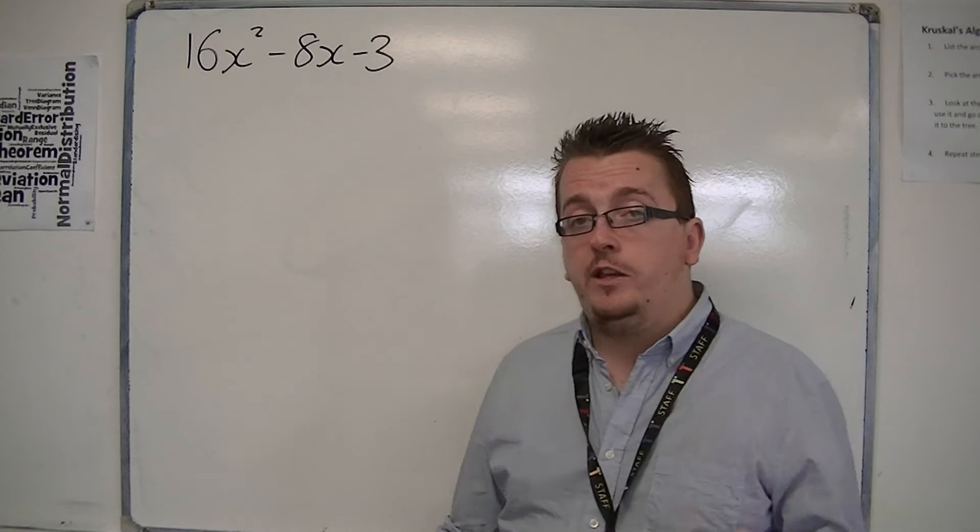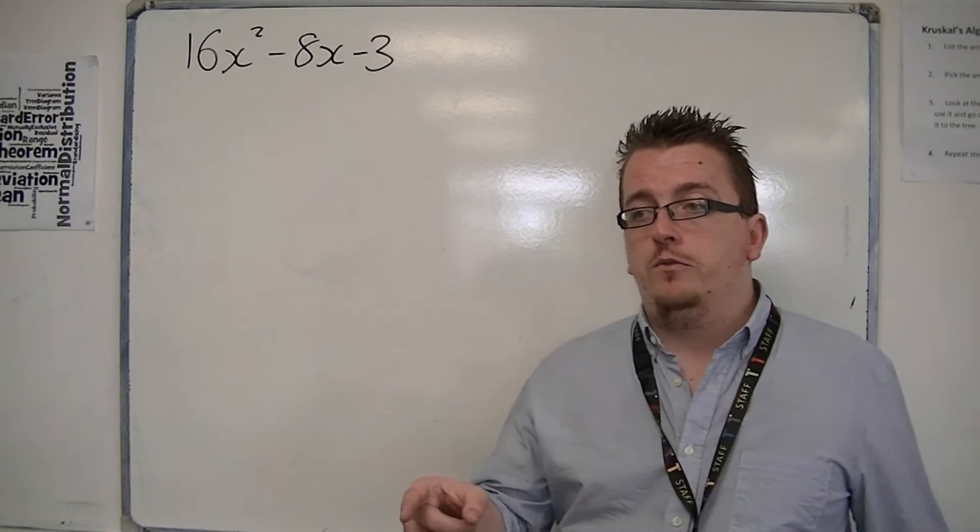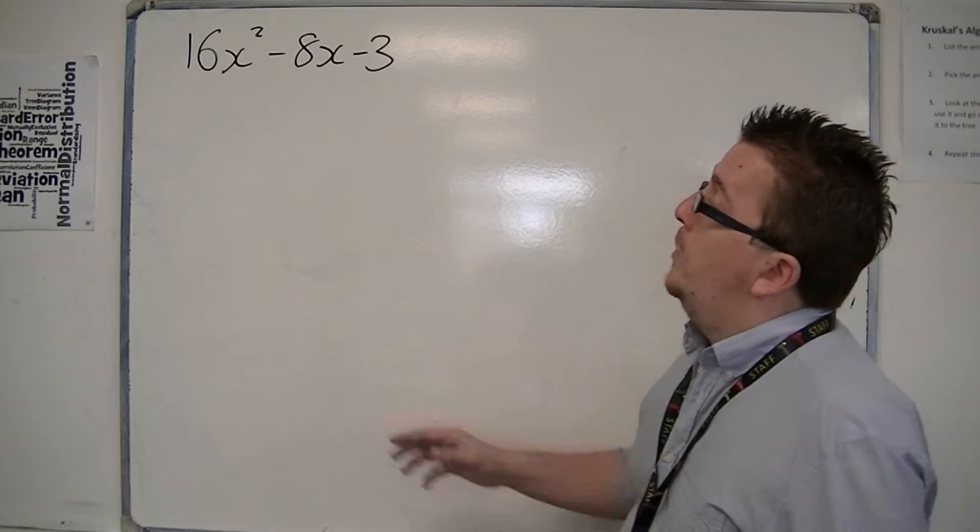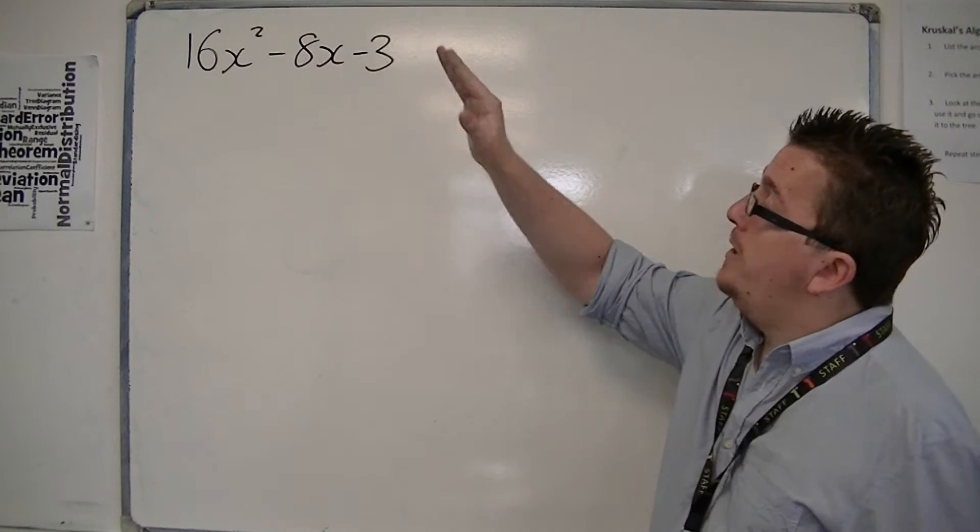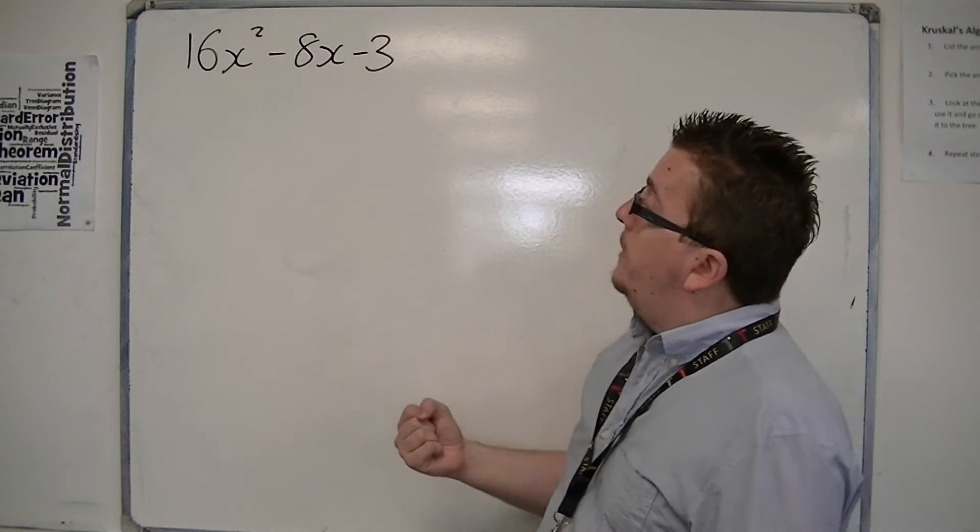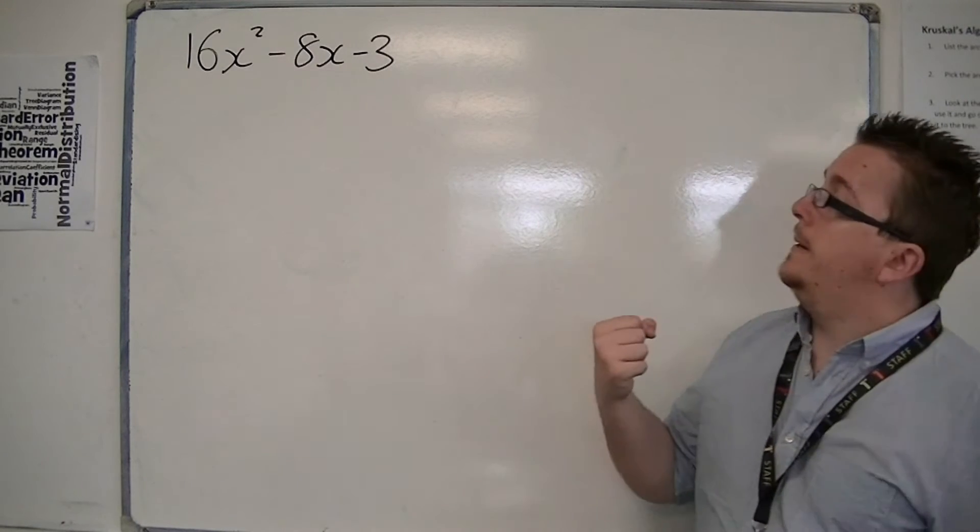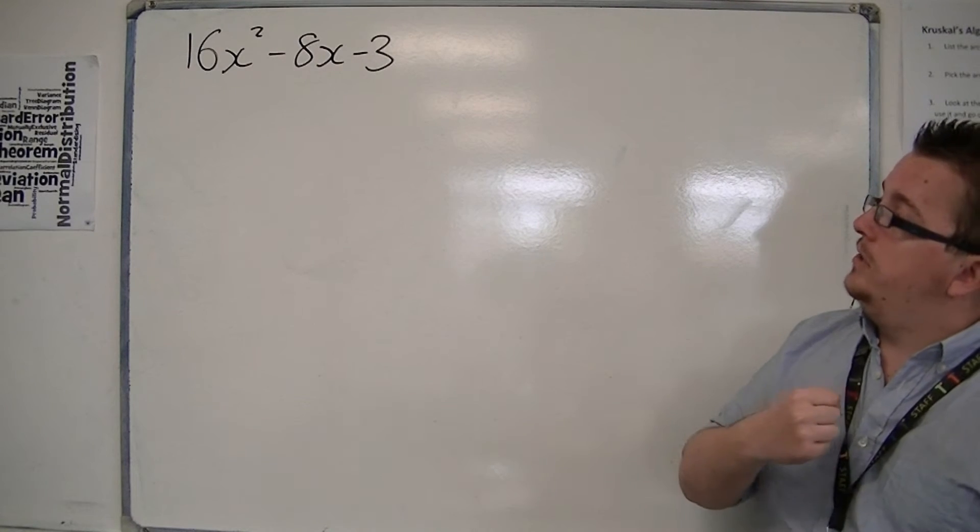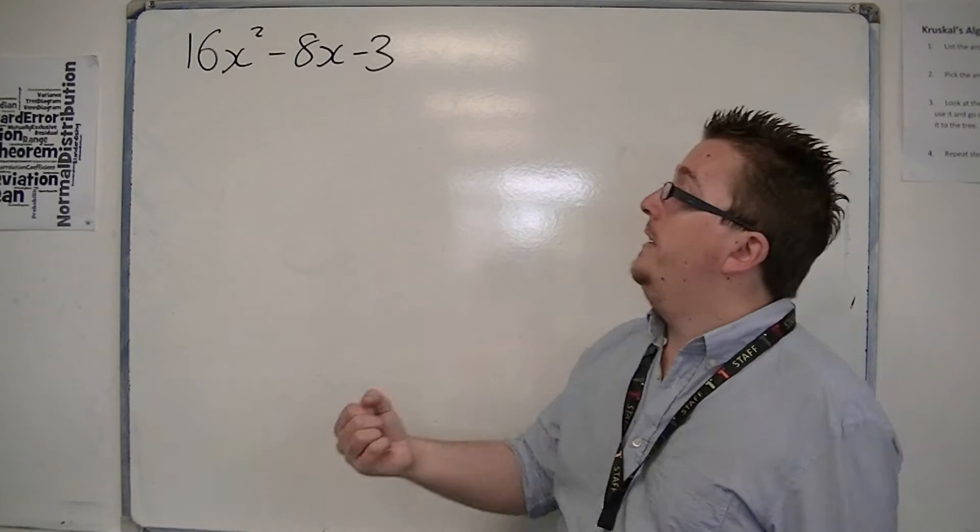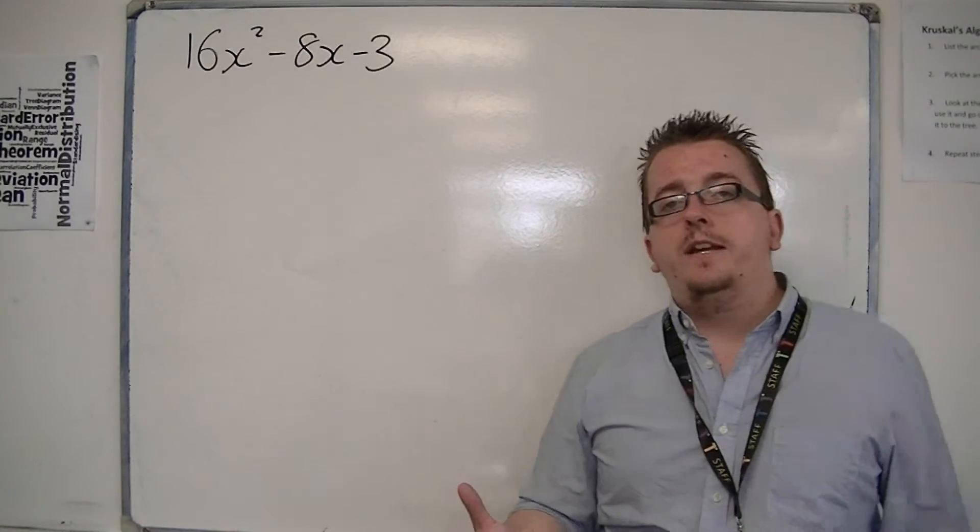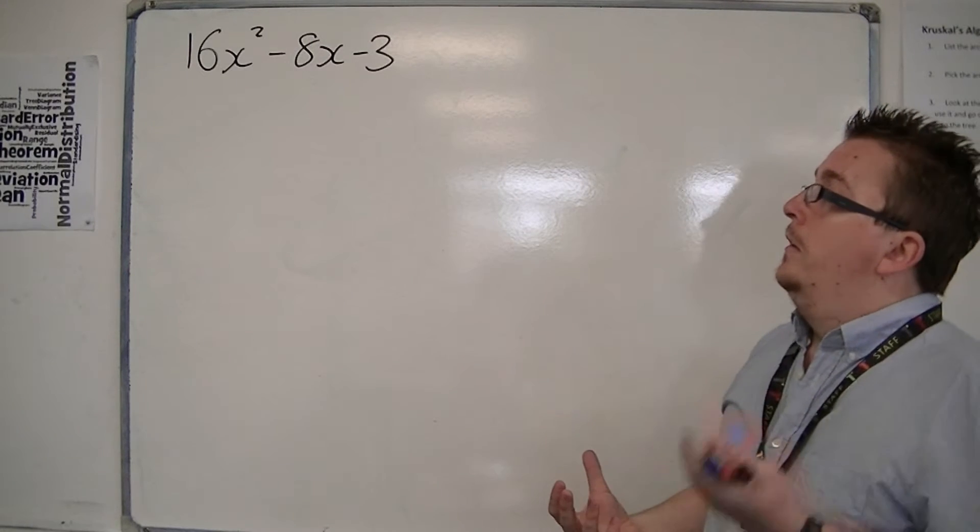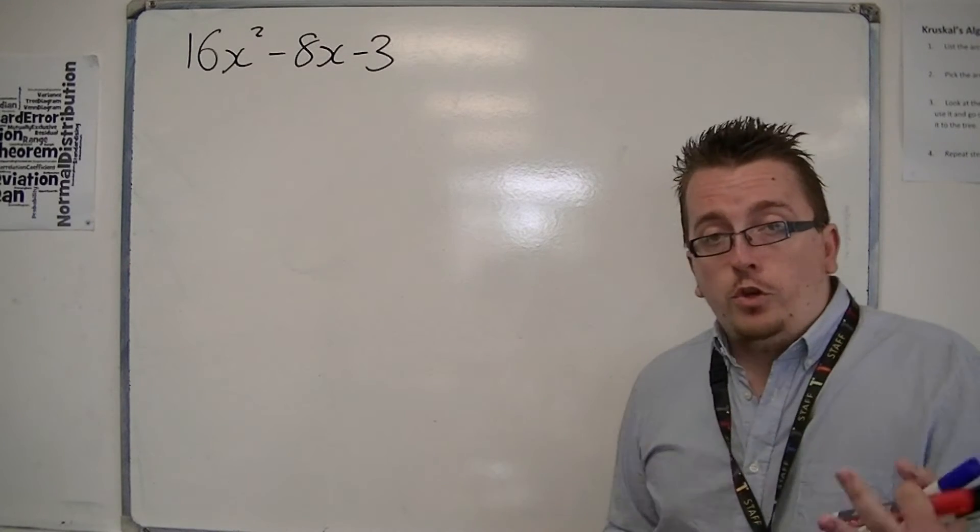You could potentially use the method that I've shown in a previous video, where you multiply the 16 by the minus 3. Then you'd look at 2 numbers that would multiply together to make 48. So 2 numbers that multiply together to make minus 48, but add together to make minus 8. And you could potentially do it that way.